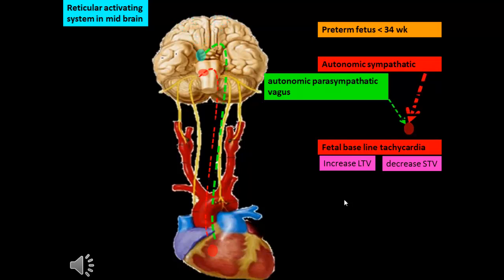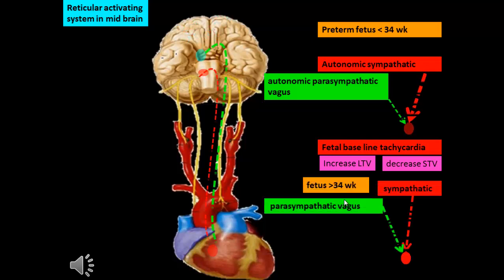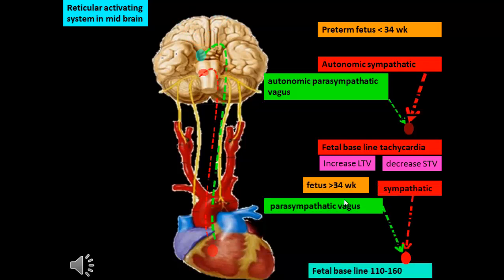When the baby grows beyond 34 weeks, the sympathetic and parasympathetic systems both affect the heart in almost equal ways, resulting in a fetal baseline of 10 to 16 beats per minute with good long-term and good short-term variability.